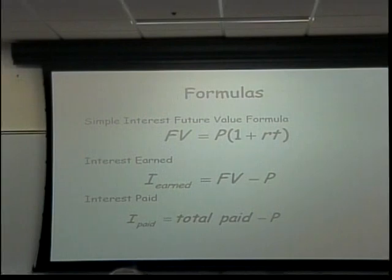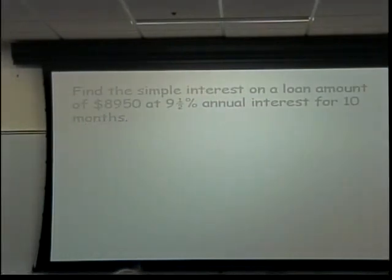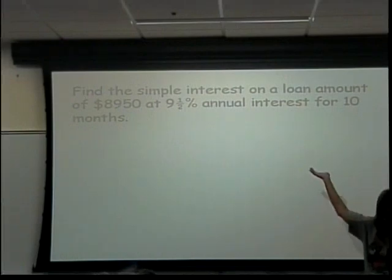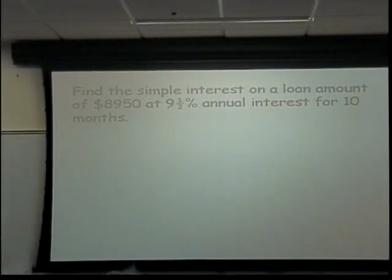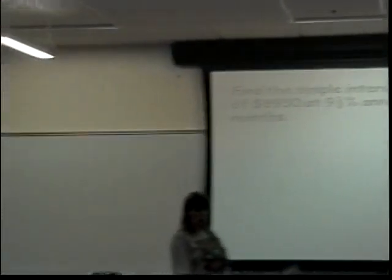Alright, now we can figure out what to do. I'm supposed to be finding interest. Am I paying stuff in? Not really. So I'm going to be using this formula. Interest earned equals future value minus the principal. So that means I need to start with what?